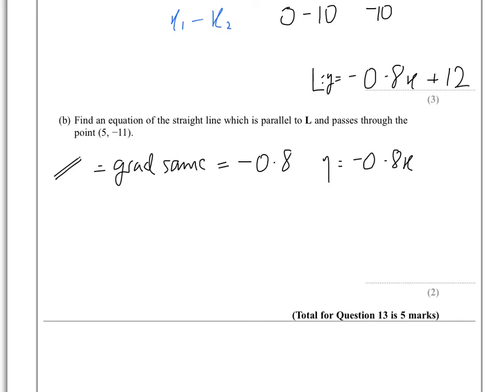So keeping that equation of a straight line in mind, y equals mx plus c, we know that y is -11. We know that m is minus 0.8 and we know that x is 5, so it's actually minus 0.8 times 5 and plus c is the one we're trying to work out.